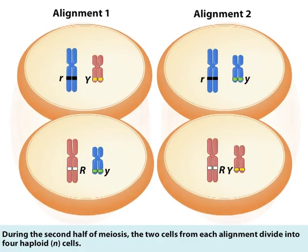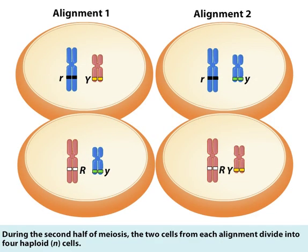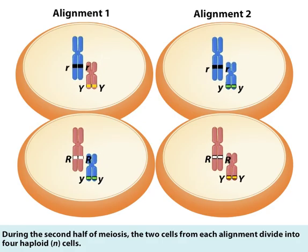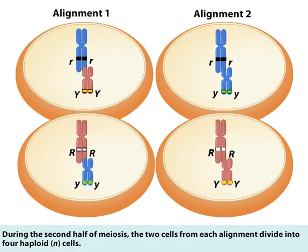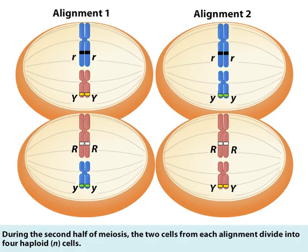During the second half of meiosis, the two cells from each alignment divide into 4 haploid cells.